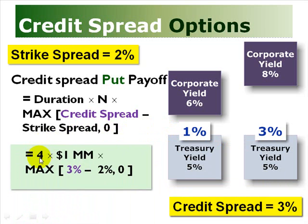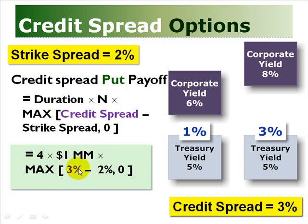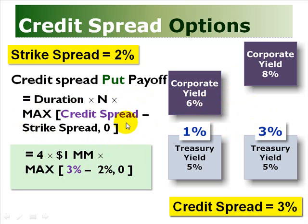With some example numbers: say the duration on the bond is 4 and the notional is $1 million. The investor now has a credit spread of 3% minus the strike spread of 2% — that never changed — so the credit spread put option is in the money, and the payoff to the buyer is 4 × $1,000,000 × 1% = $40,000. On the other hand, if the corporate yield had stayed at 6%, the credit spread would have remained 1%, and given the strike spread was 2%, the option would have never moved into the money and there would be no payoff to the investor. So that's an illustration of the credit spread put.